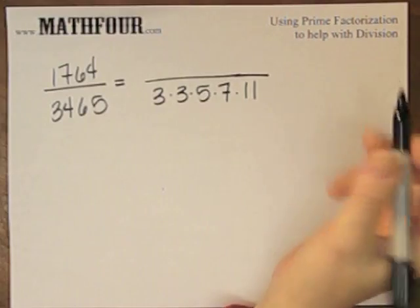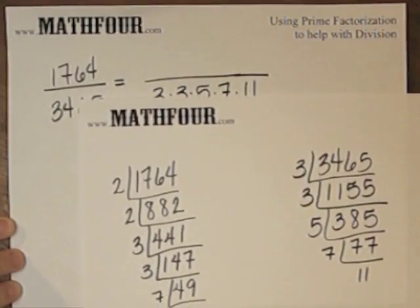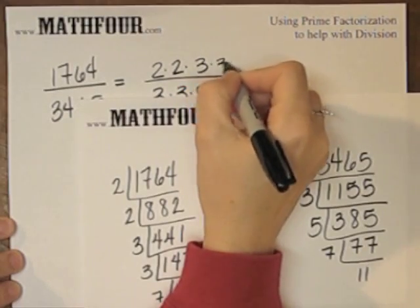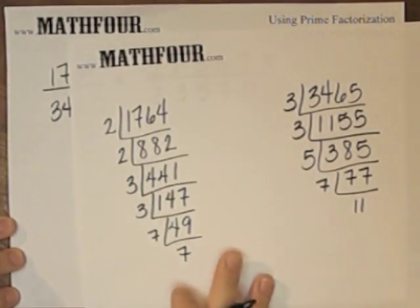And for students' benefits, you probably should go ahead and show them the factorization and how you do it. And there's the factorization of 1764.